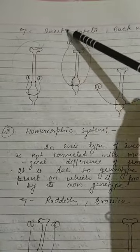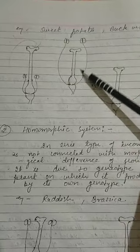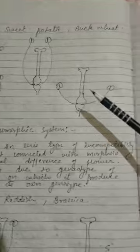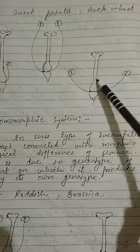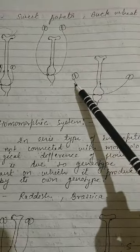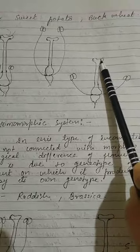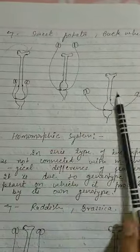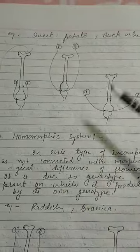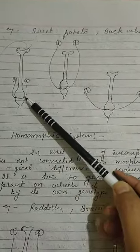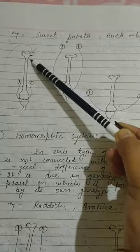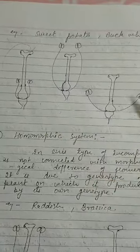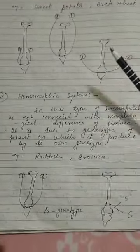As a second case, the anther filament may be much larger than the style or stigma, creating a large distance between them. Here also, the distance between the pollen and the stigma is too great — so these morphological barriers are responsible for self-incompatibility. Within the same plant, both anther and stigma, that is the male and female parts, are present.